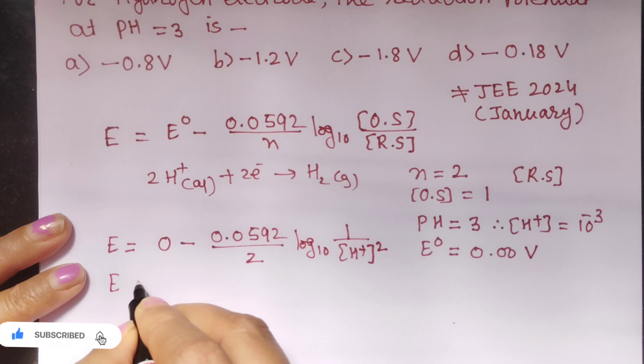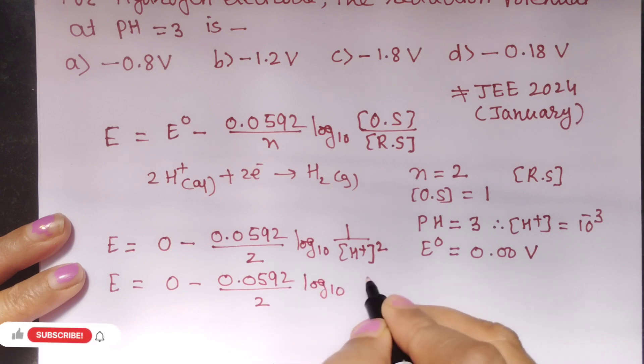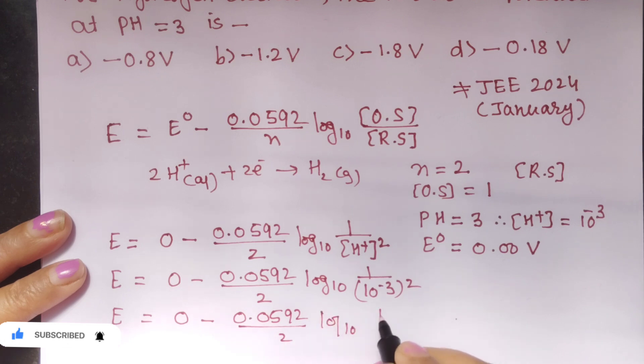Now substitute the further values that is 0 minus 0.0592 upon 2 log to the base 10 of 1 upon 10 raise to minus 3 square. So that is E is equal to 0 minus 0.0592 upon 2. Log to the base 10 of 1 upon 10 raise to minus 6.